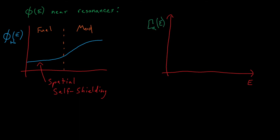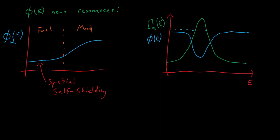A similar concept exists for neutron flux as a function of energy instead of space. If we look at the absorption cross-section for a single resonance, we'll see that the enormous absorption cross-section near the peak of the resonance actually creates a dip in the flux surrounding the energies of this resonance. Just as spatial self-shielding creates a dip in the flux as a function of space, the large neutron cross-section around these resonances can also create a dip in the flux as a function of energy. This energy-based flux depression is known as energy self-shielding.